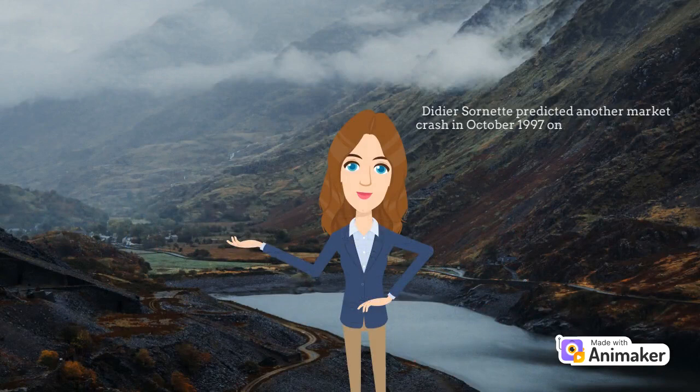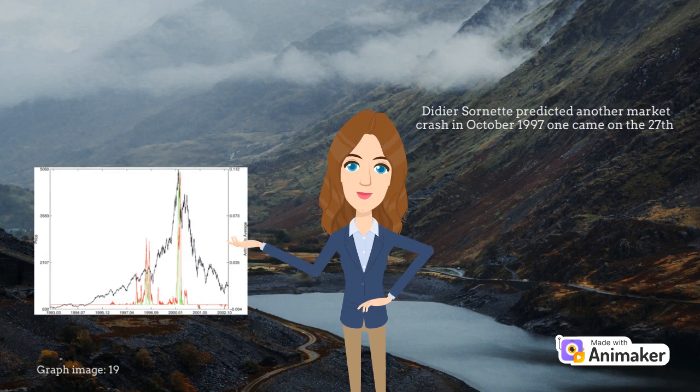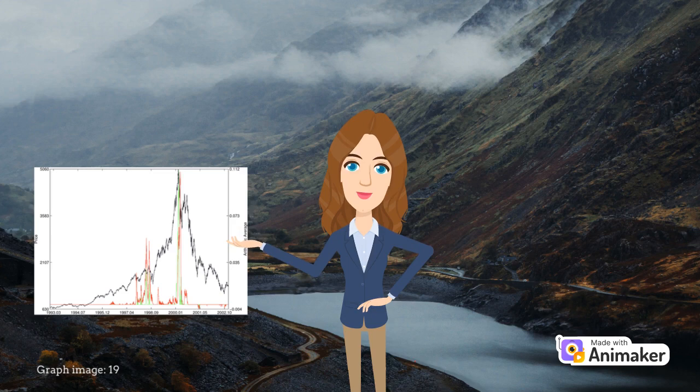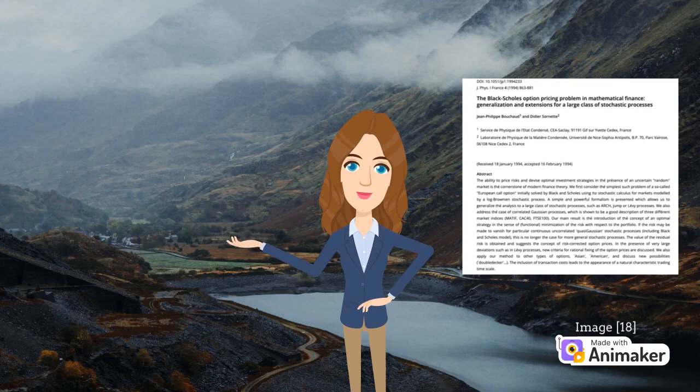Didier Sornette predicted another market crash in October 1997. One came on the 27th. He did this by utilizing the physics of fractures. The idea was that a rupture would be preceded by smaller events following a specific pattern, a log periodic. He also co-authored a paper in 1994, which showed how to price options even if the underlying stock does not follow the assumptions of Black and Scholes.